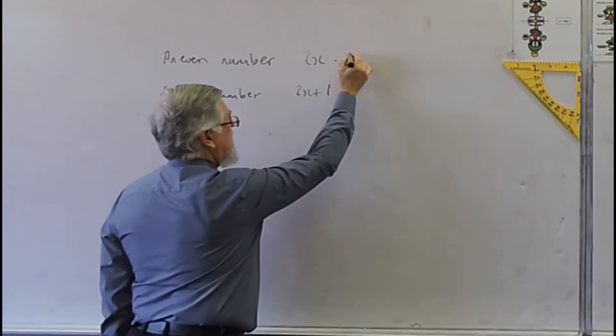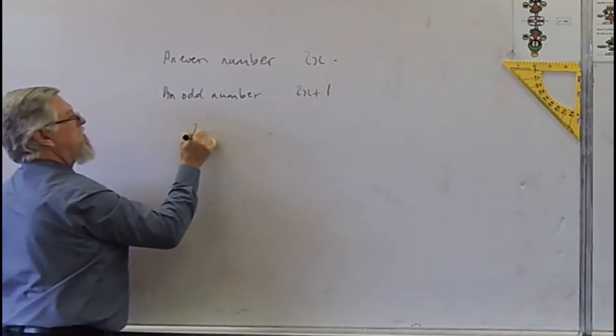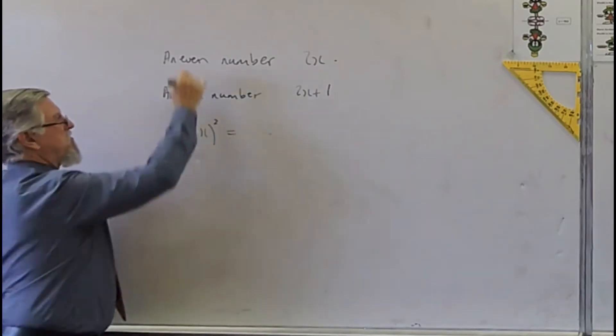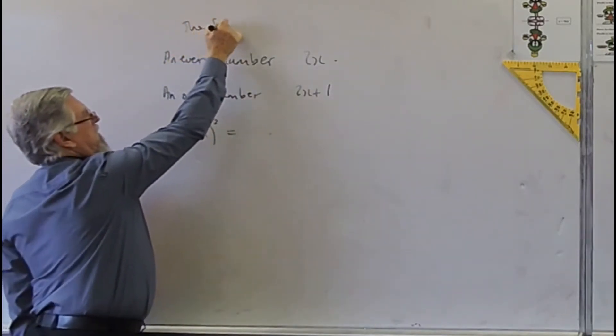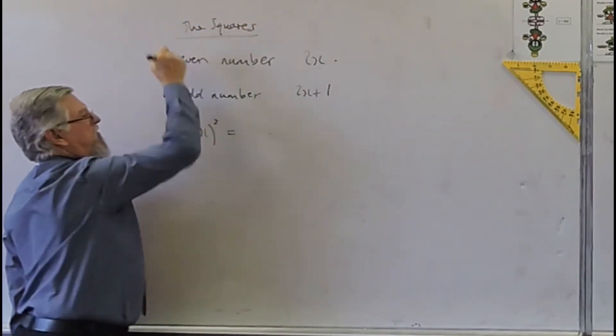So now what we're going to do is square it. So 2x squared. So we're looking at the squares: the square of an even and the square of an odd.